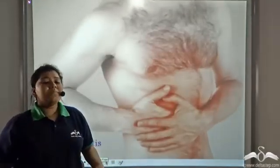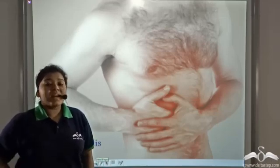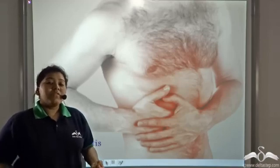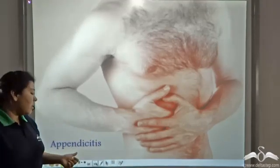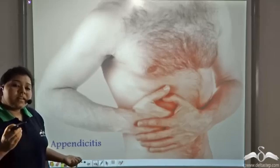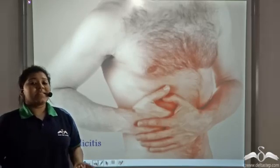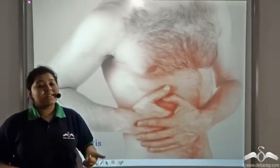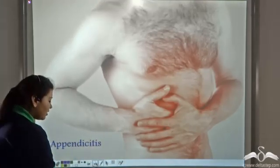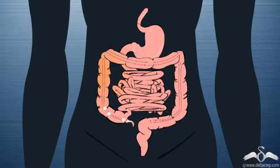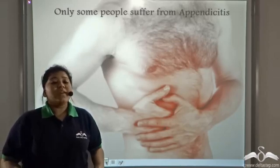We have often heard people complaining of tremendous pain in the right side of the abdomen. One of the reasons for this pain might be a condition known as appendicitis. Appendicitis is a disease which affects a portion of the large intestine known as the appendix. Unabsorbed food molecules like roughage get stored in this appendix, and slowly the appendix gets swollen and causes immense pain in this region. So during this condition, doctors ask us to remove the appendix surgically.